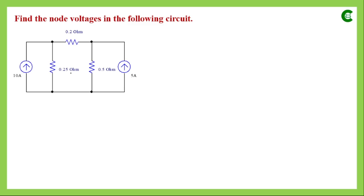To apply KCL, we first identify the principal nodes. At the top-left node, three branches are connected, so it is principal node A. At the top-right node, also three branches are connected — that is principal node B. At the bottom, there are two separate nodes but no active or passive elements between them, so they are treated as a single node with four branches — principal node C.